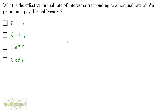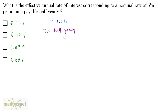What is the effective annual rate of interest corresponding to a nominal rate of 6% per annum, payable half yearly? The question asks what will be the rate of interest for the amount obtained by calculating it on 6% per annum, payable half yearly. Let us first assume that the principal is 100 rupees. The compound interest is payable half yearly, so let us calculate the amount.